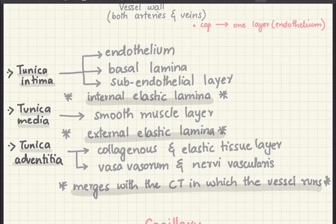The tunica media is chiefly composed of smooth muscles, which is required because arteries can contract and relax on their own via autonomic supply — veins can also do that. After that, between the tunica media and adventitia, we are going to have the external elastic lamina.